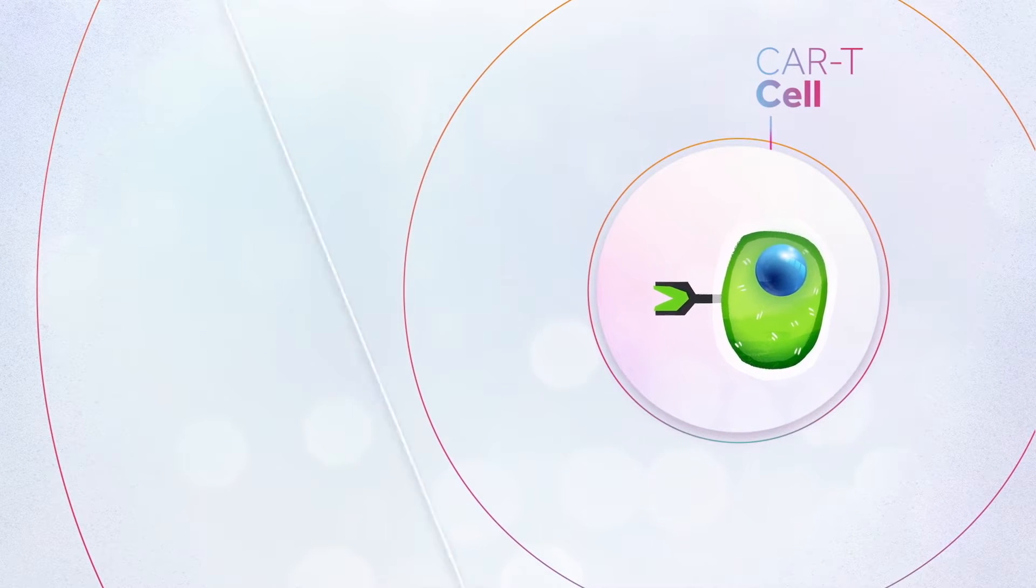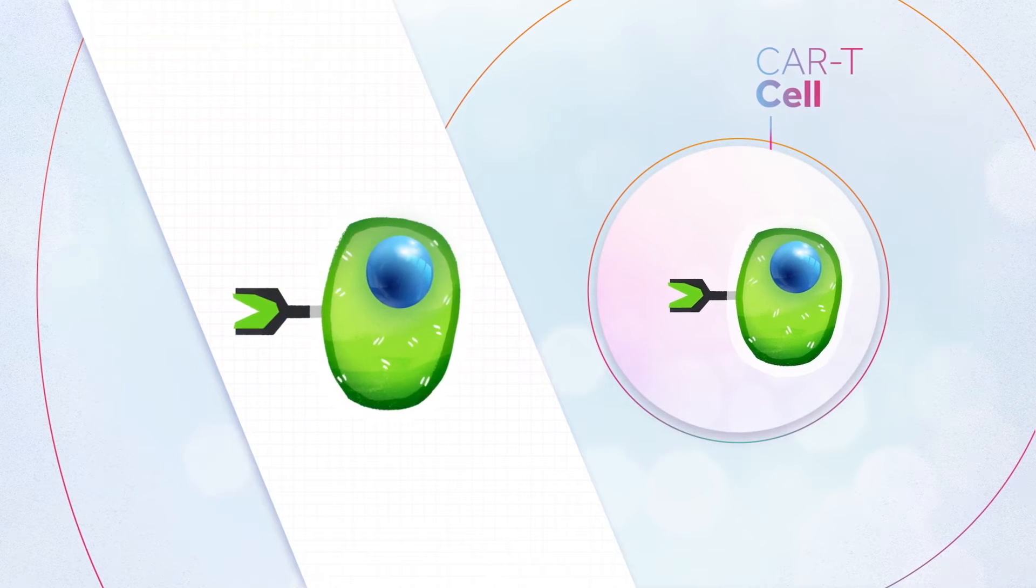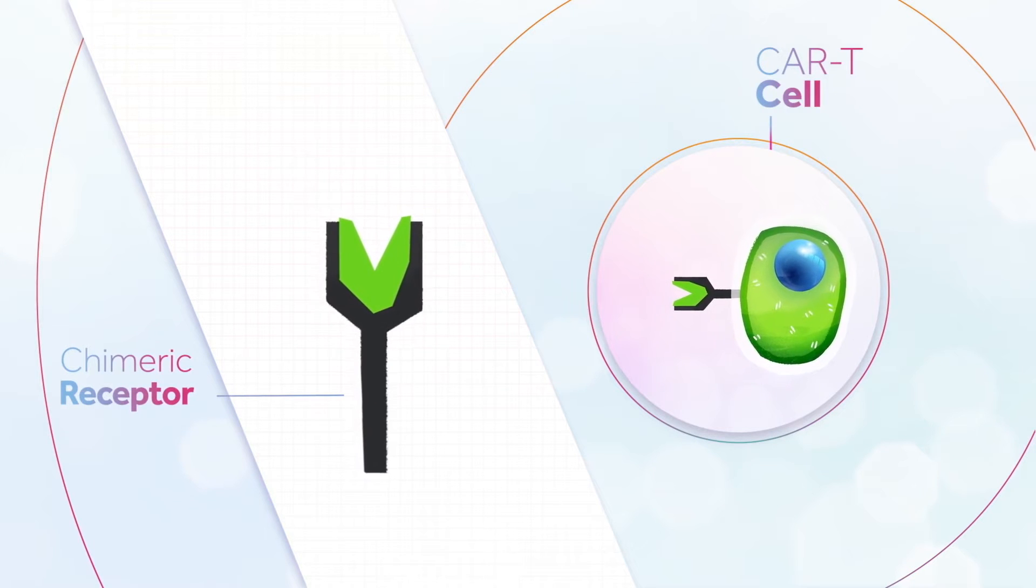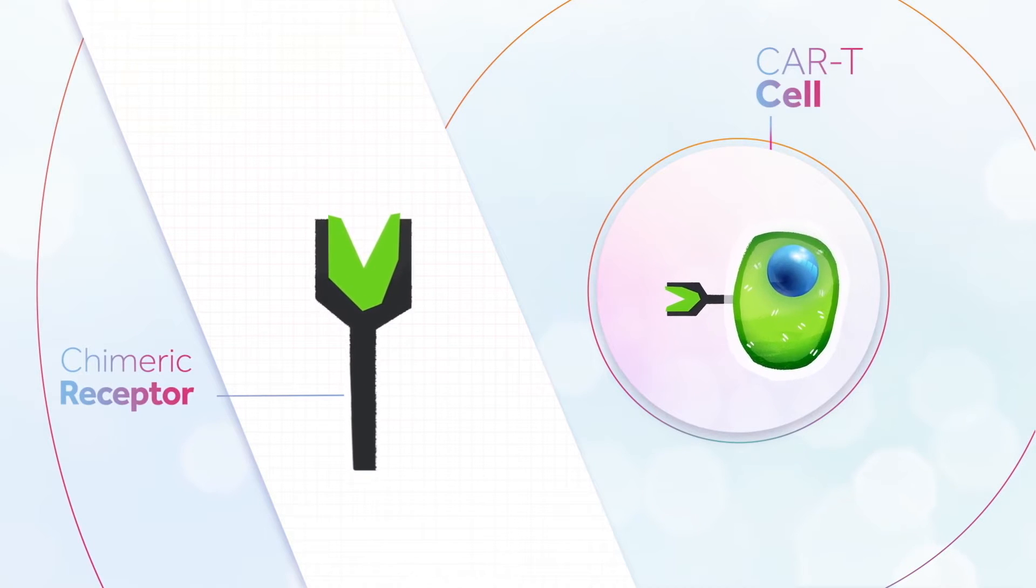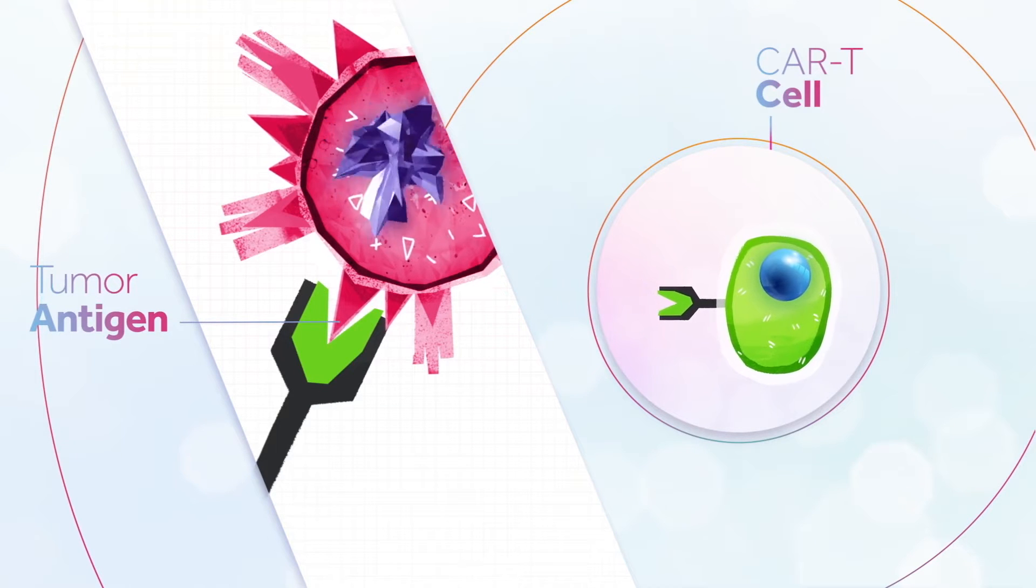A CAR T cell is produced from a T cell that was genetically engineered to express on its surface an artificial receptor called a chimeric receptor. This chimeric receptor is most generally based on an antibody that binds an antigen specific to a certain type of cancer.